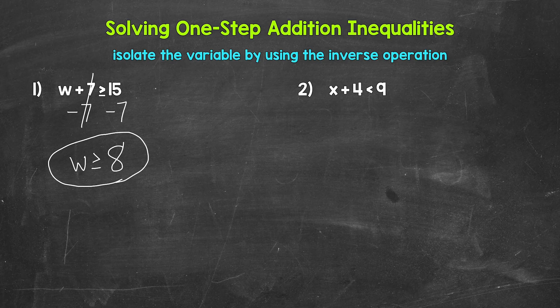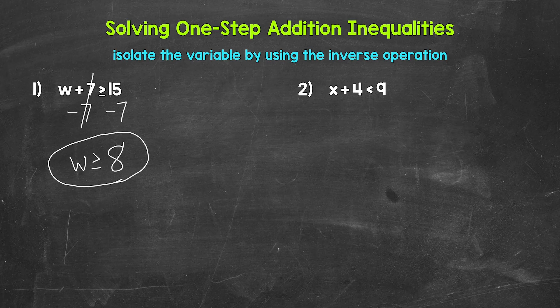So any value greater than or equal to eight is a solution of this inequality — it makes it true. Let's check a solution to make sure we are correct. We can't check every value greater than or equal to eight — that would be impossible. We have an infinite amount of possibilities as far as solutions. So we can check one value. Let's use 10.